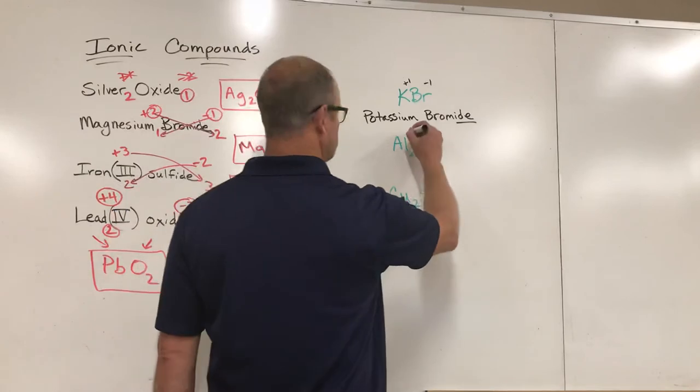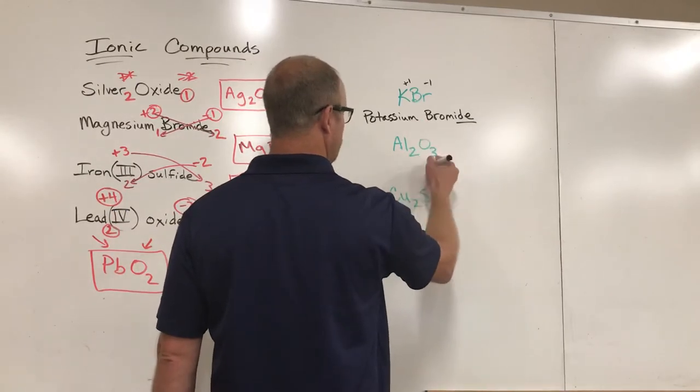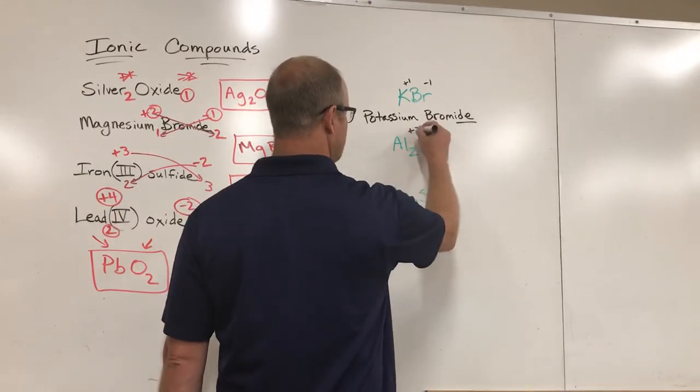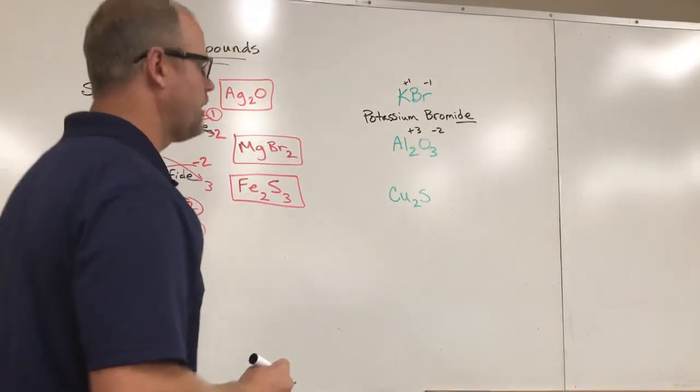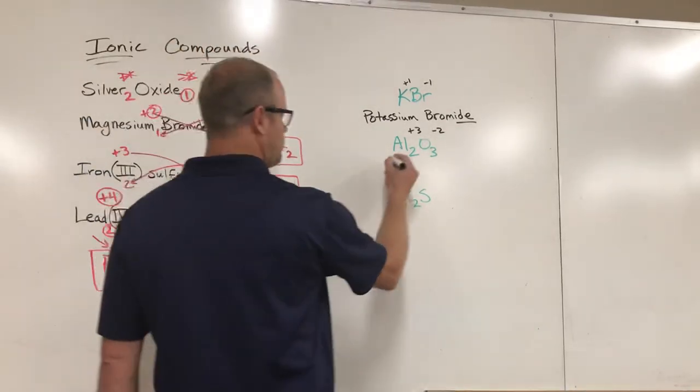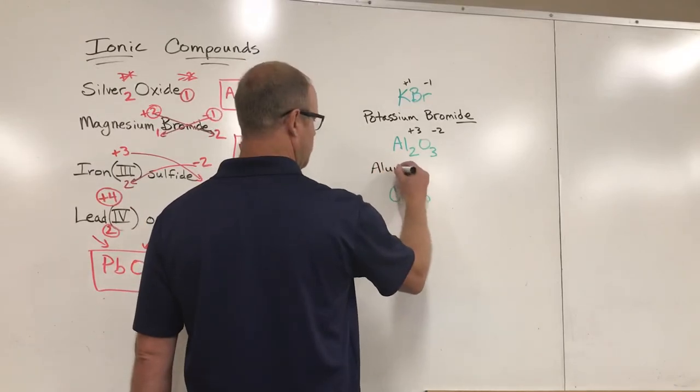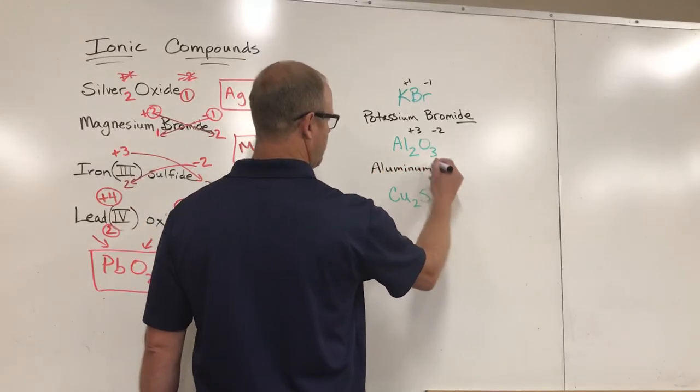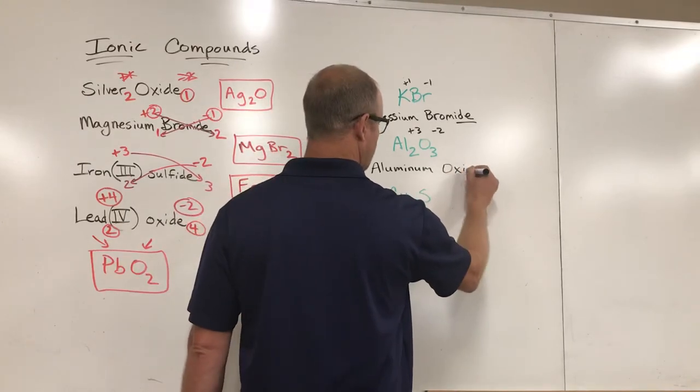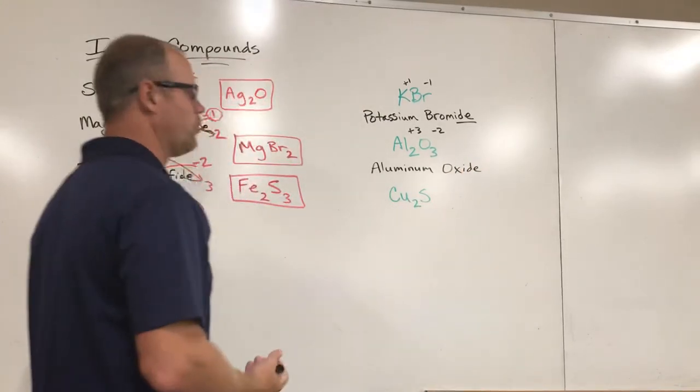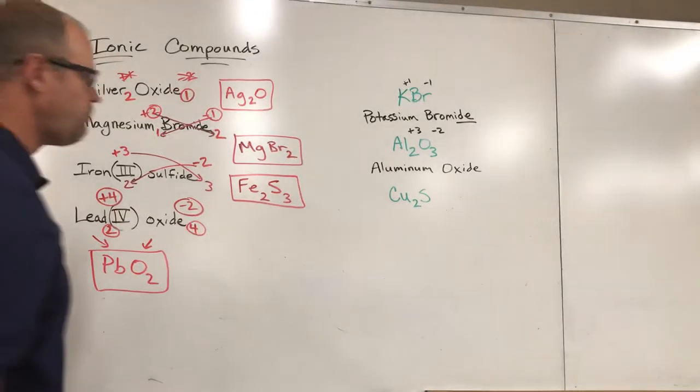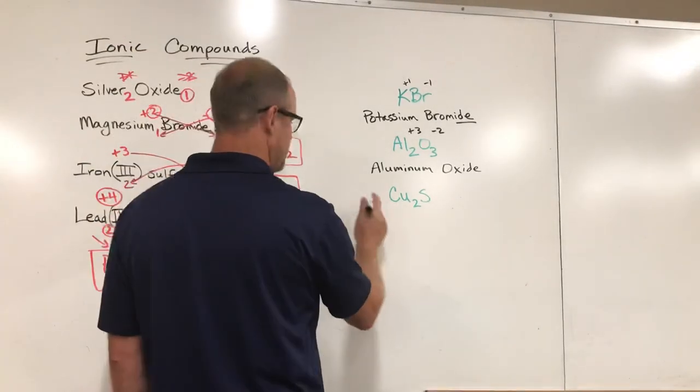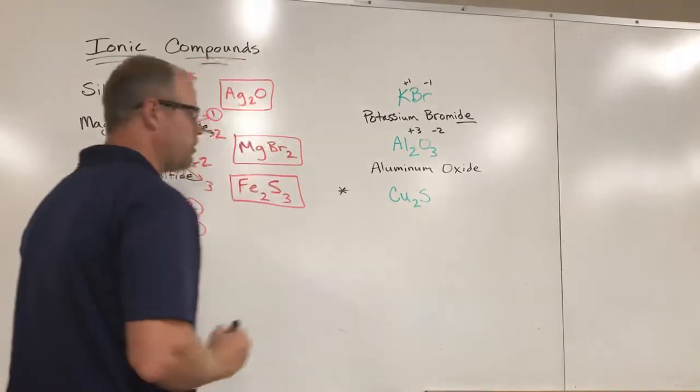If we look at aluminum - there's two of them - oxygen, there's three of them - but that comes from these charges. It's the only way aluminum and oxygen will combine together. So we just name this aluminum, and then oxygen becomes oxide. There is no other formula for aluminum oxide, so we don't need to name it with anything else.